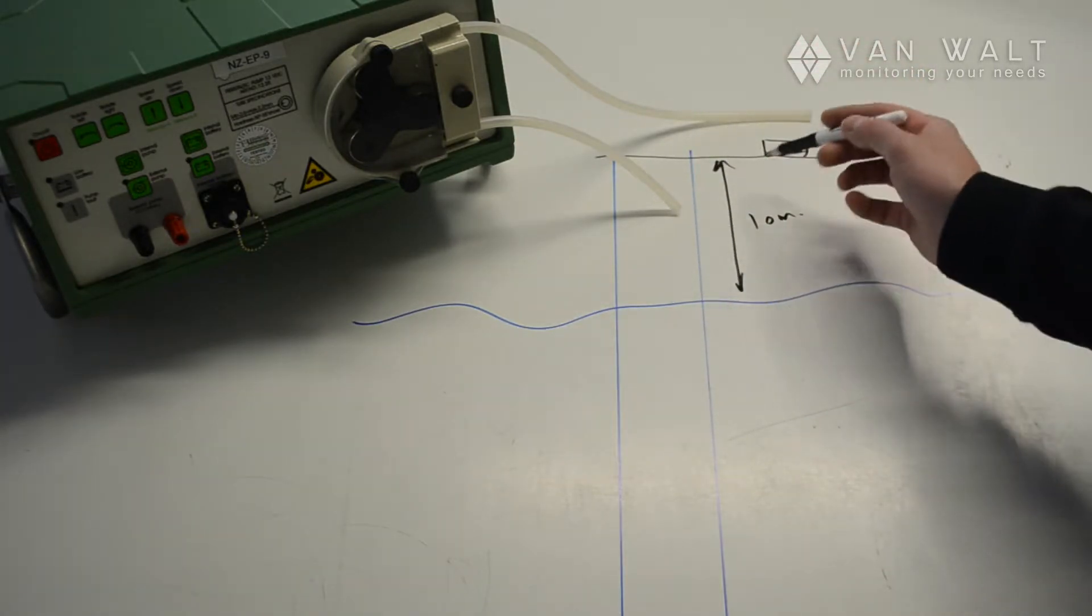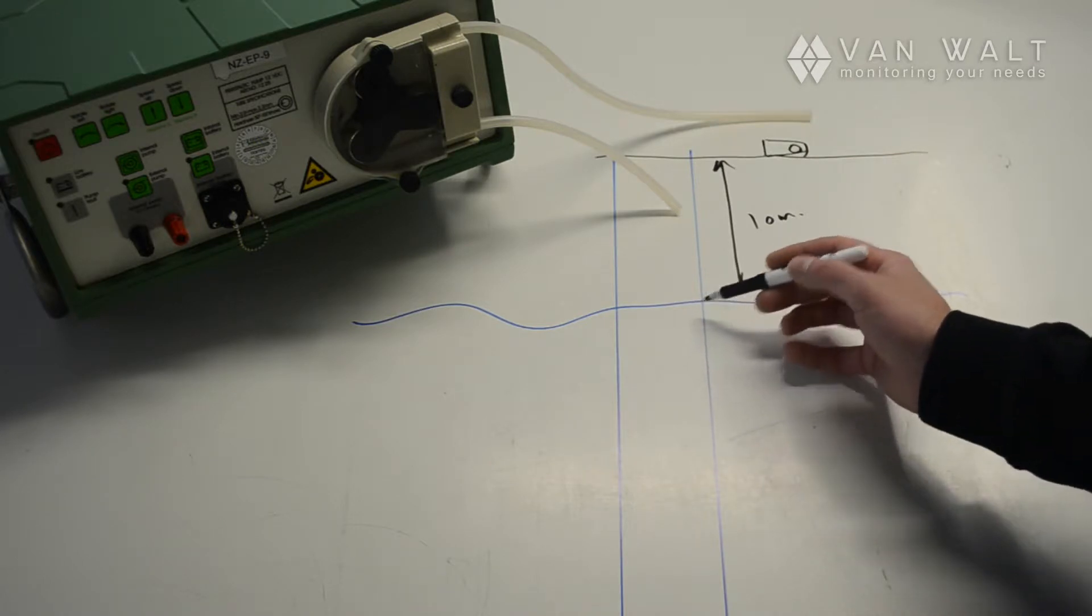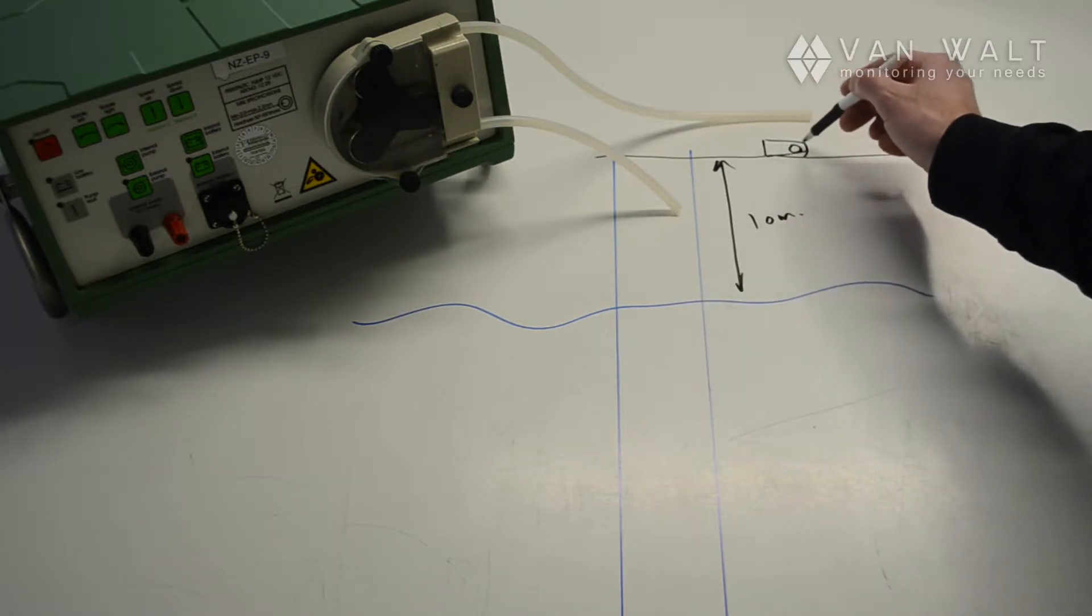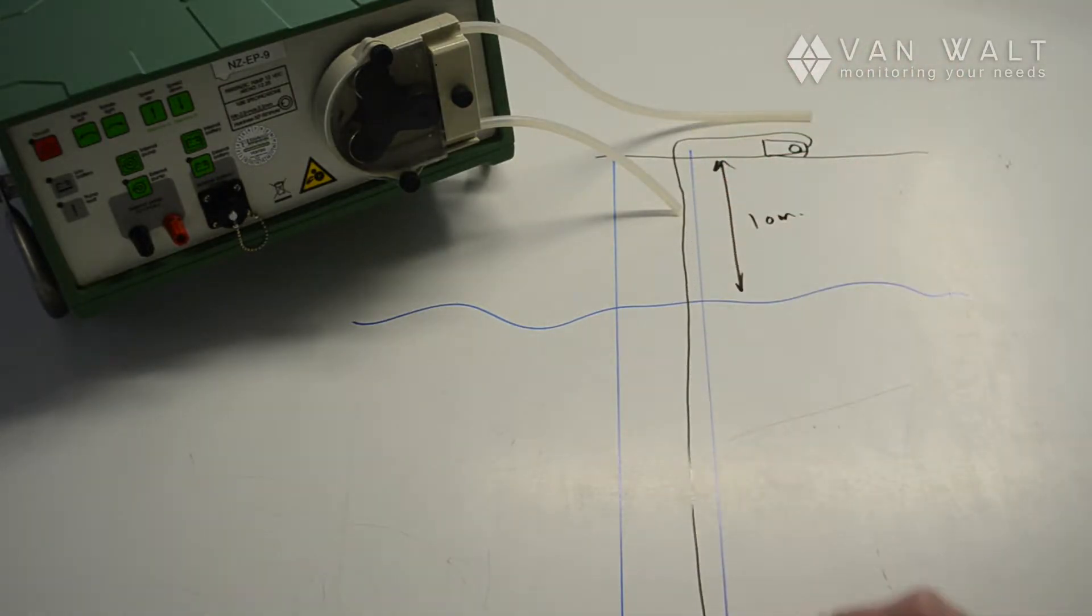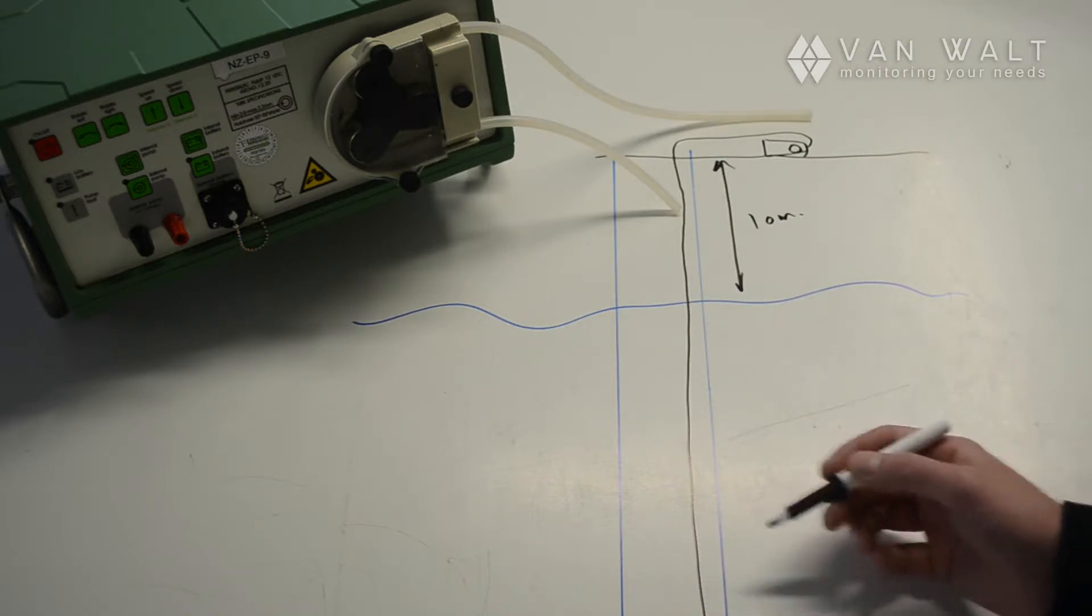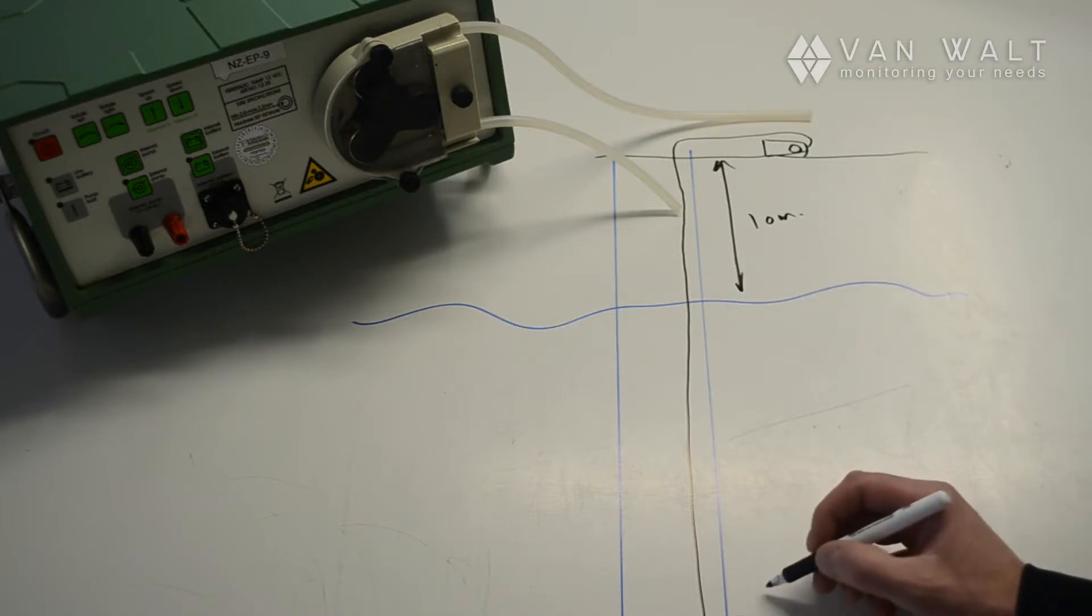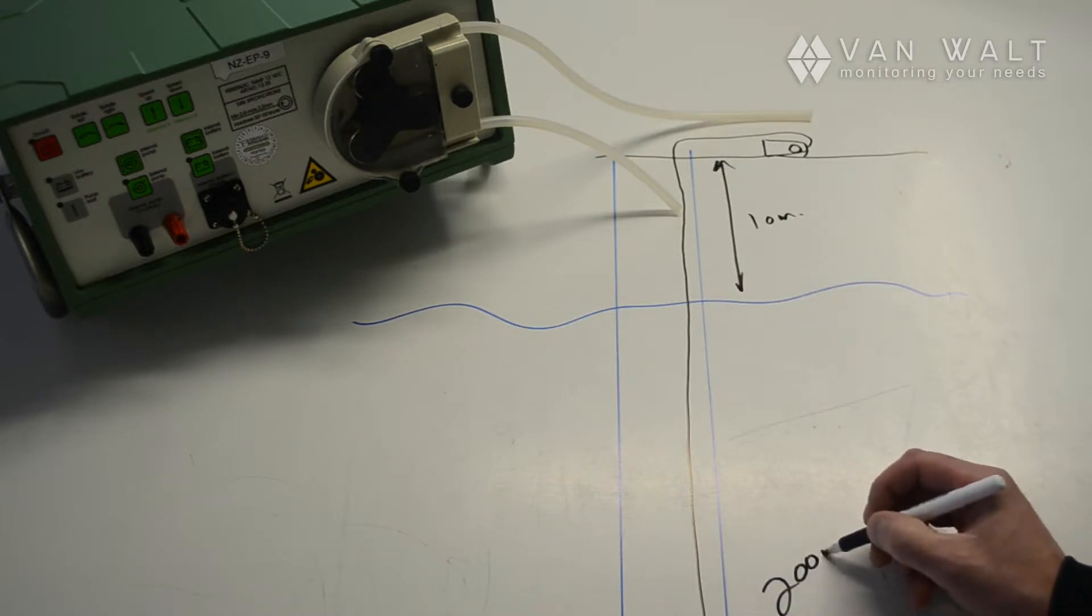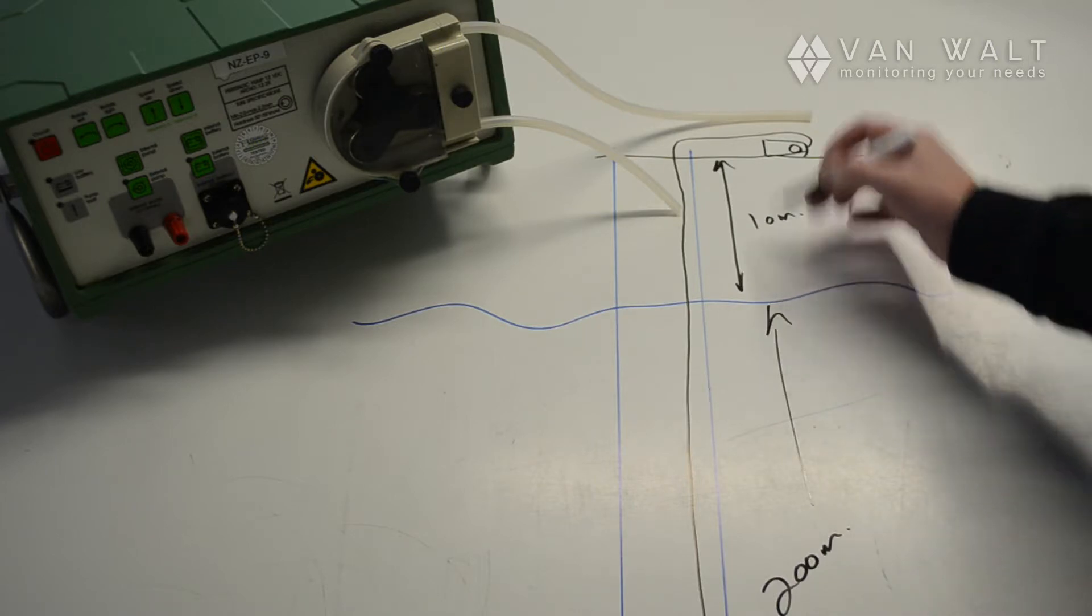Now that doesn't mean you can't lower the tubing any further. The limitation as far as tubing is concerned is only how much tubing you have. This can go down for essentially hundreds of meters if you want to. We've had customers sampling typically at 150 or 200 meters below ground level, provided that the lift is less than 10 meters.